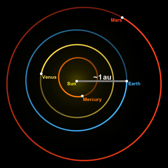Originally conceived as the average of Earth's aphelion and perihelion, since 2012 it has been defined as exactly 149,597,870,700 m, or about 150 million km.